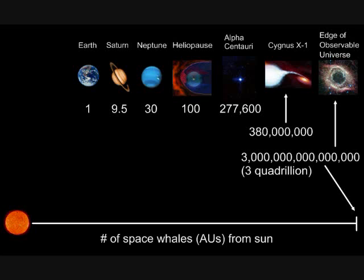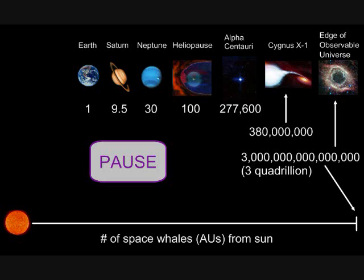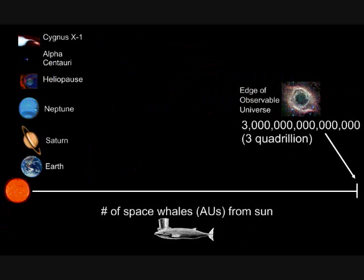What I'd like to do is take the items from our table and graph them on a line. On the far left we have the Sun, on the far right we have the edge of the universe at three quadrillion space whales, and somewhere on the line we place all the rest of the items so that the distances match the distances on the line. There is actually a problem with doing that — pause if you need some time to think about it. Unfortunately, all of them would fall on the far left, so the black hole would appear in the same place as the earth.